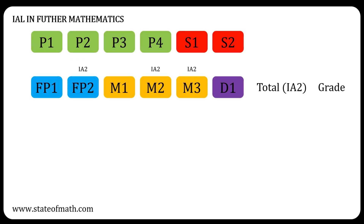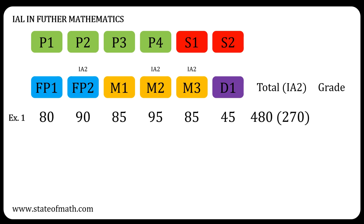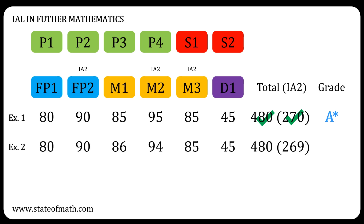Let's go over some examples. With this combination, in the six units for the IAL in further mathematics — that's the second row — there are only three IA2 units. In example one, the total UMS is 480 and the total of the IA2 units is 270, so both conditions are satisfied and an A-star is awarded. In example two, the total UMS is 480, but the total of the IA2 units is 269. The A condition is satisfied but not the star condition, so the grade awarded is an A.